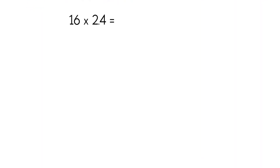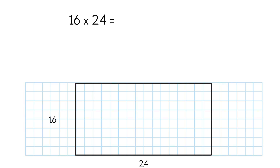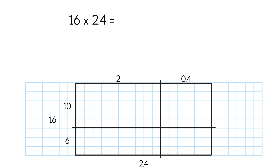Now let's go back to decimals. The numbers are similar, but instead of 24, we have 2.4. We are going to multiply a two-digit whole number and a decimal. We do the same thing — we start by drawing the area model, a rectangle with sides of 16 and 2.4. Don't pay much attention to the fact that 2.4 looks bigger than 16; it doesn't matter in these problems. The area of this rectangle represents the product of 16 times 2.4. Like in the previous example, let's divide the rectangle into 4 smaller rectangles. We break apart 16 into 10 and 6, and 2.4 into 2 and 0.4, separating the whole and decimal parts. Let's rewrite 16 as 10 plus 6 and 2.4 as 2 plus 0.4.